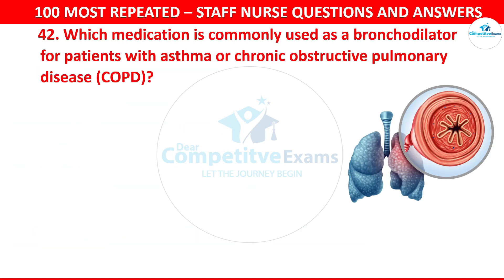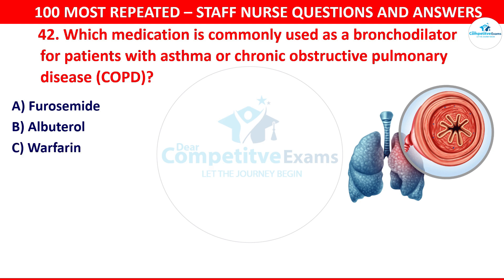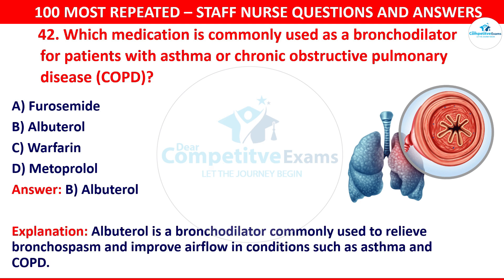Question number 42: Which medication is commonly used as a bronchodilator for a patient with asthma or chronic obstructive pulmonary disease (COPD)? Options are furosemide, albuterol, warfarin, or metoprolol. The correct answer is albuterol. Albuterol is a bronchodilator commonly used to relieve bronchospasm and improve airflow in conditions such as asthma and COPD.